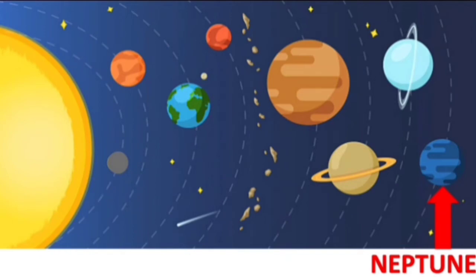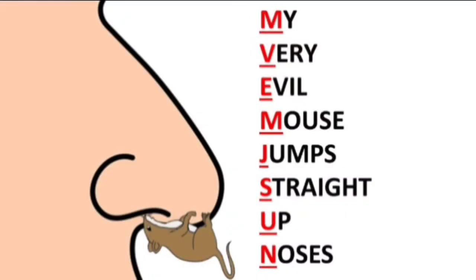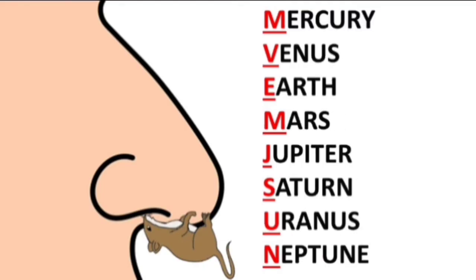How can we remember the order of the planets? There is a little poem to help you. Now look at the first letter of each word to help you remember: my very every evil mouse jumps straight up noses. Mercury, Venus, Earth, Mars, Jupiter, Saturn, Uranus and Neptune.